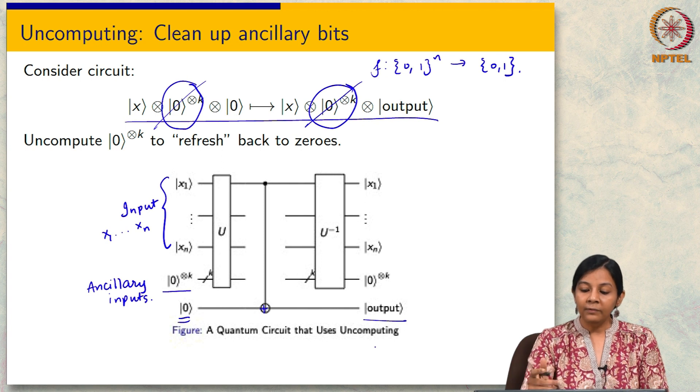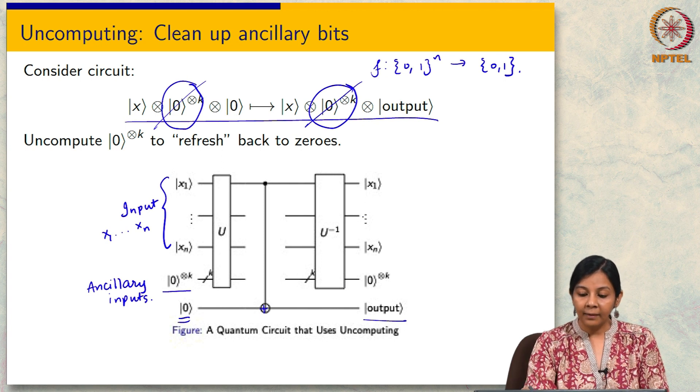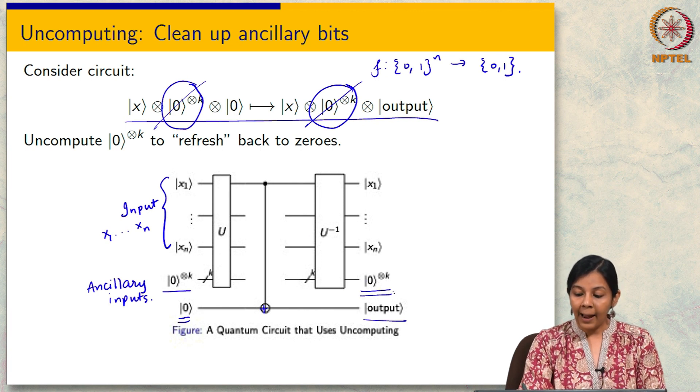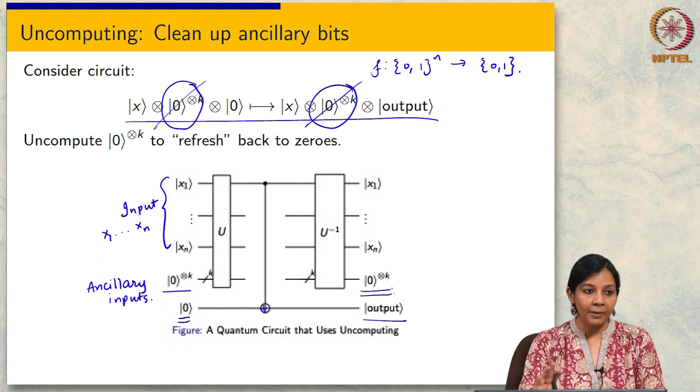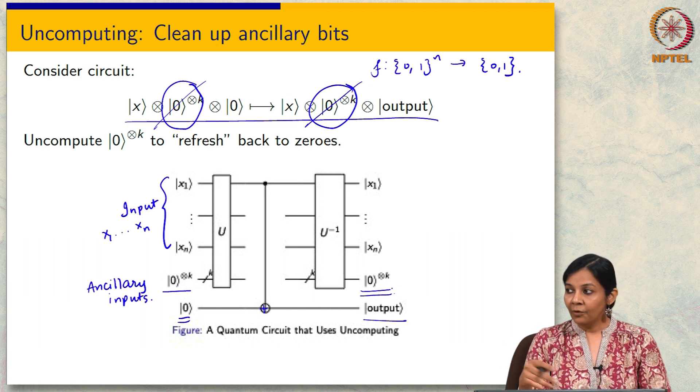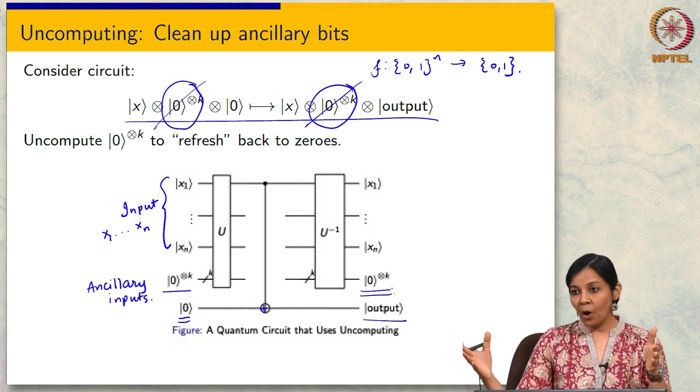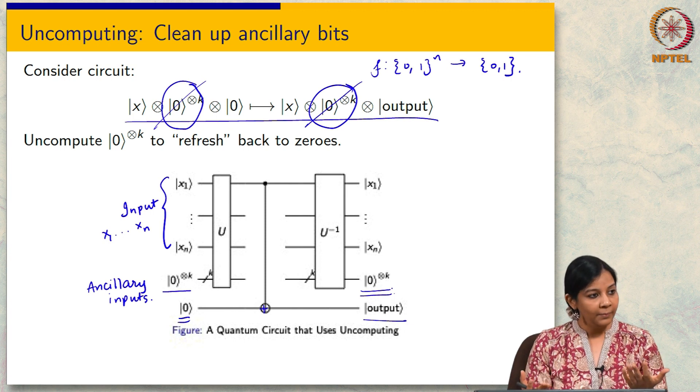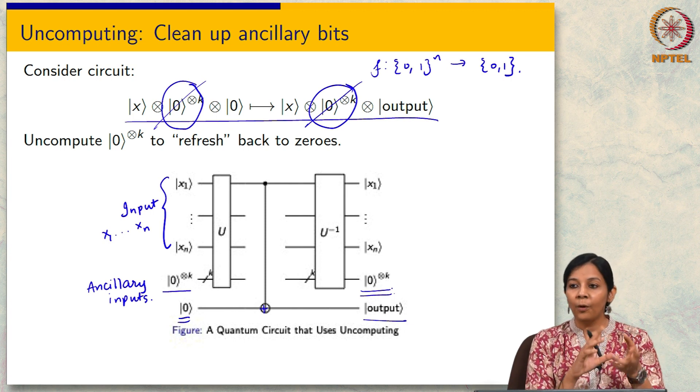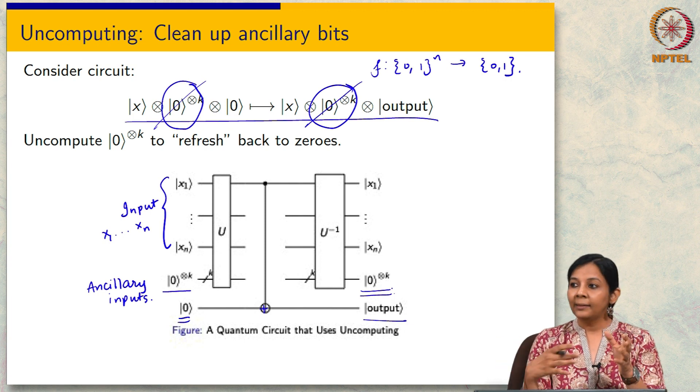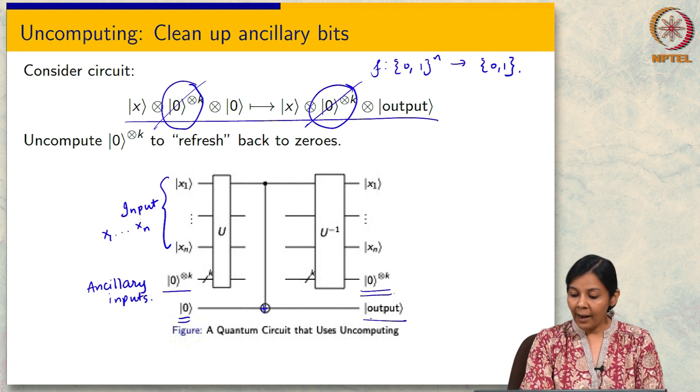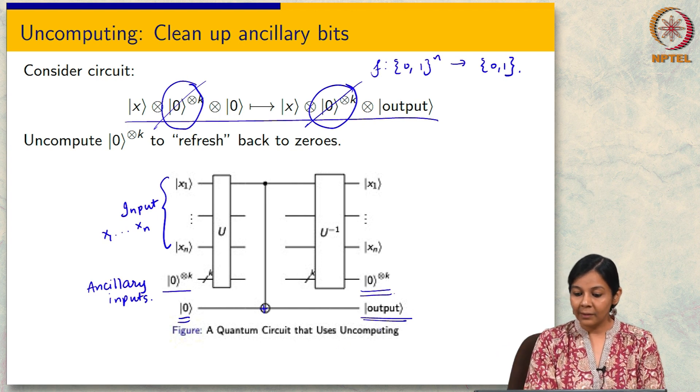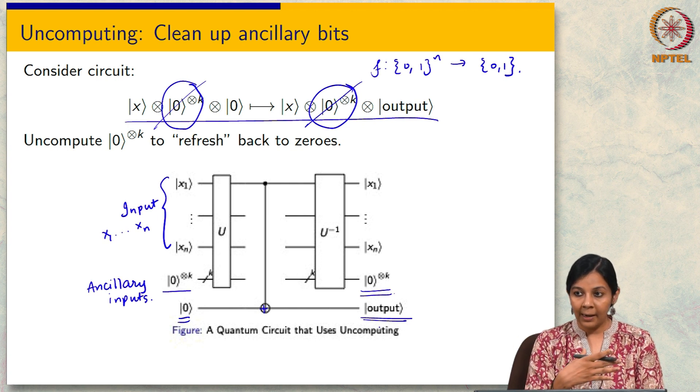And now what I will do is simply apply the inverse of this transformation to these bits to recover back my ancillary bits in a fresh state. So, I have uncomputed. Basically I did some computation, I used them in some way, and now having used them in some way I am just going to perform the inverse of the computation. Remember I am not uncomputing my answer.